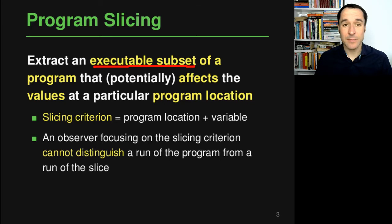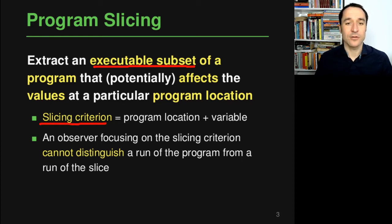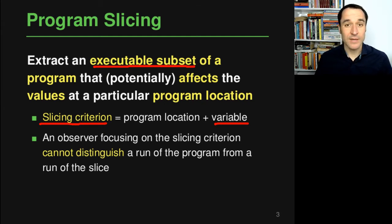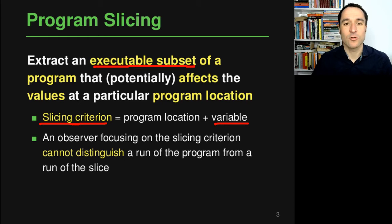Given a potentially large program, slicing tries to extract an executable subset of this program that affects the values that exist at a particular program location. Given something called a slicing criterion — which is essentially a point in the program, so the program location and a particular variable or memory location that you really care about — slicing wants to extract that subset of the program that is responsible for computing the value of that variable at this particular program location.